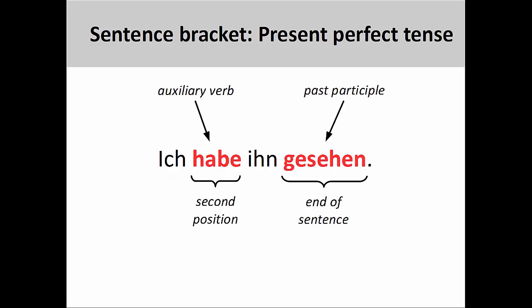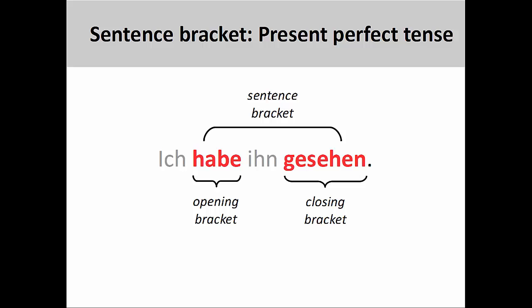The sentence bracket also makes an appearance in the present perfect tense, which is what we would use when talking about events that happened in the past. In the sentence ich habe ihn gesehen, I have seen him, the auxiliary, or helping verb habe, appears in the second position, and the past participle gesehen appears at the end of the sentence. The helping verb forms the opening bracket, and the past participle forms the closing bracket.